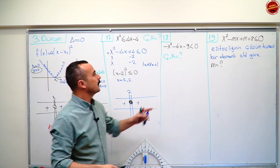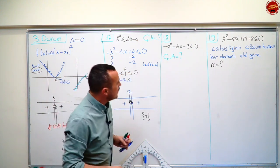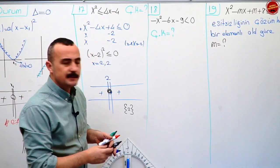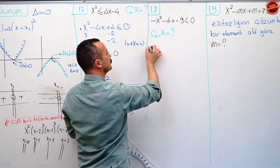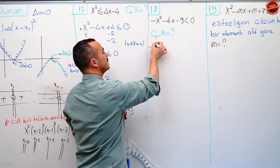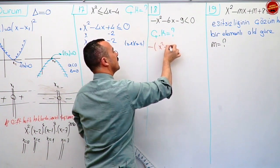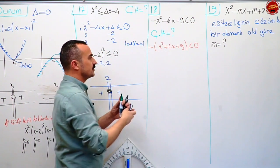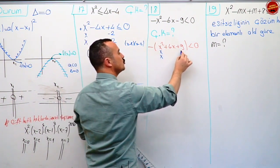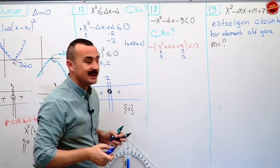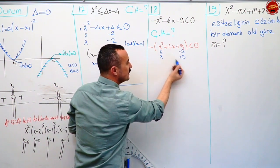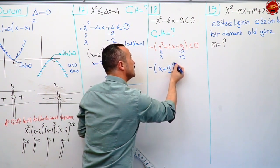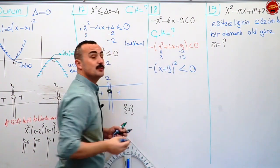Şimdi vermiş bize eksi x kare eksi altı x eksi dokuz küçükmüş sıfır. Çarpanlarına kolay ayırabilmek için eksi parantezi alalım: eksi parantezinde x kare artı altı x artı dokuz. İçeriği çarpanlarına ayırmaya çalışalım: x kare, x ile x'in çarpımı. Dokuz, üç ile üçün çarpımı. Artı altıyı verebilmesi için x artı üç, x artı üç. Yani eksi parantezinde x artı üçün karesi. Küçükmüş sıfır.